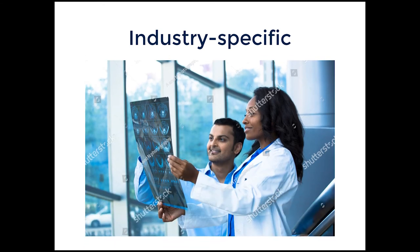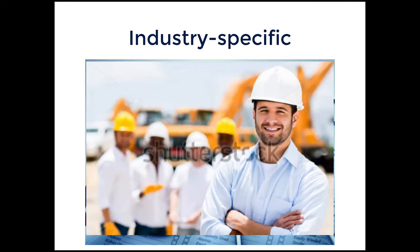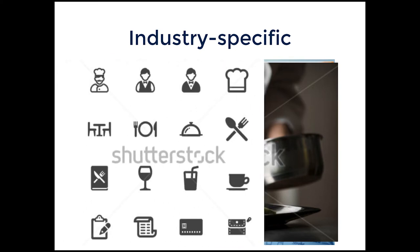Another type of image that is going to sell really well is industry-specific images. These go right along with the business side of things, but you're creating your image specifically for an industry — like healthcare here. Dress up your friends in doctor lab coats and try to create natural-looking situations around the industry. Construction is another good example — there are tons of construction businesses, and they all need marketing materials but can't all afford photo shoots, so they reach out to stock sites. Restaurants are good too — you can set up food shots, servers with customers, and icon sets that pertain to the industry.